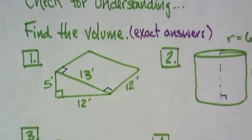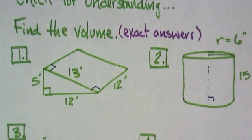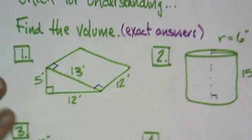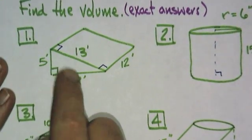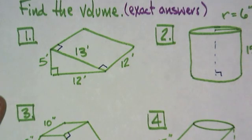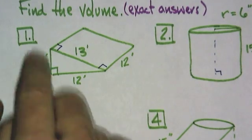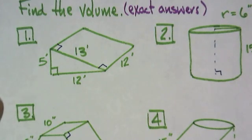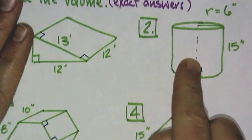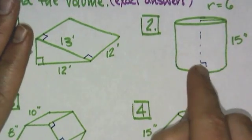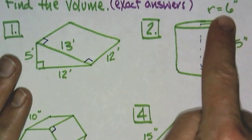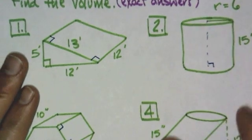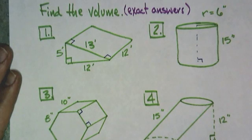So, here are your problems for the day. We need to find the volume and exact answers for a right triangular prism with those edge lengths. A right cylinder with a radius of six inches and a height of 15.